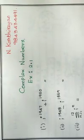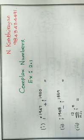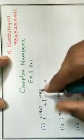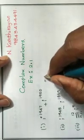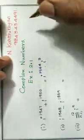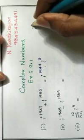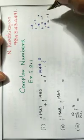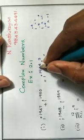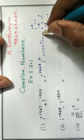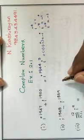Today we are discussing complex numbers Exercise 2.1. First problem: i to the power 1947 plus i to the power 1950. From last class, i to the power 4 equals 1, i cubed equals minus i, i squared equals minus 1. Since 1944 is a multiple of 4, i to the power 1944 is 1, and i cubed is minus i. So the answer is minus i.